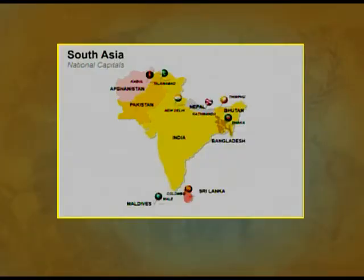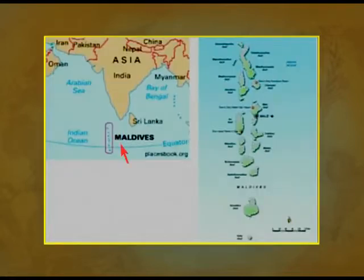The Maldives is the smallest country in South Asia, both in terms of population and land area. Its total area is less than 300 square kilometers — specifically 298 square kilometers. As per estimates of 2012, the population of Maldives is around 3.5 lakh only. As you can see in the map, the island nation is located in the southwestern part of the Indian Ocean and the southern part of India.